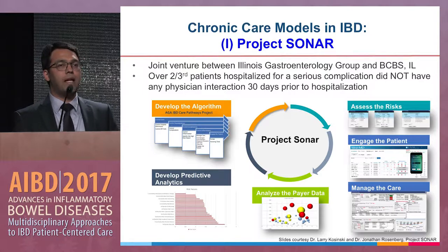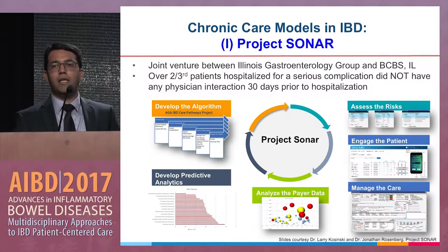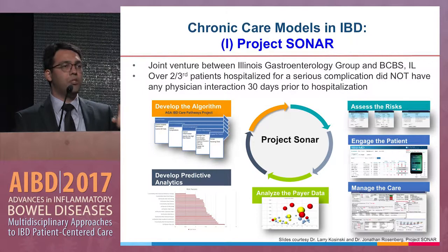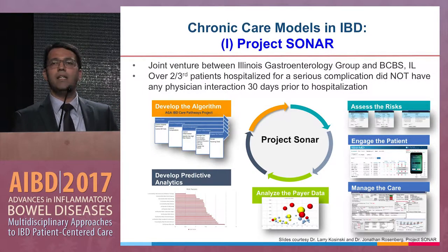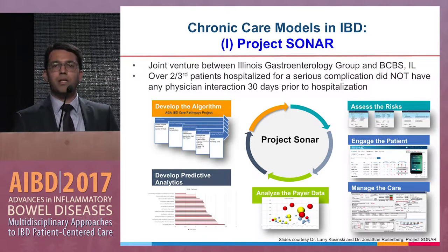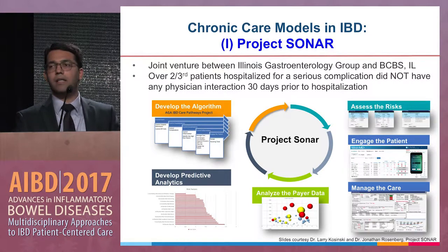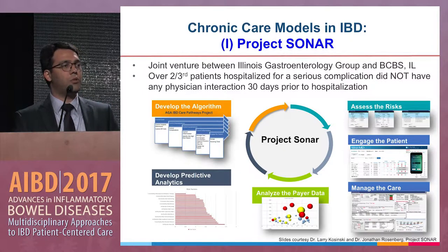They assessed and categorized patients at risk, engaged them outside of the clinic by sending monthly pings to see how patients were doing, used standardized disease activity indices, identified patients who were getting worse with a clinic visit perhaps three months out, and proactively reached out to those patients to manage their care.